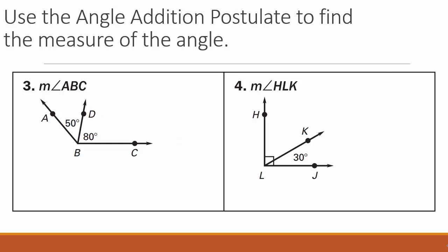Checkpoint problems number 3 and 4 are yours. In both of these problems, we are to use the angle addition postulate to find the measures of the angle. So, for checkpoint problem number 3, find the measure of angle ABC. And for checkpoint problem number 4, find the measure of angle HLK. I'll give you a hint. This little square box over here means that this HLJ is 90 degrees.